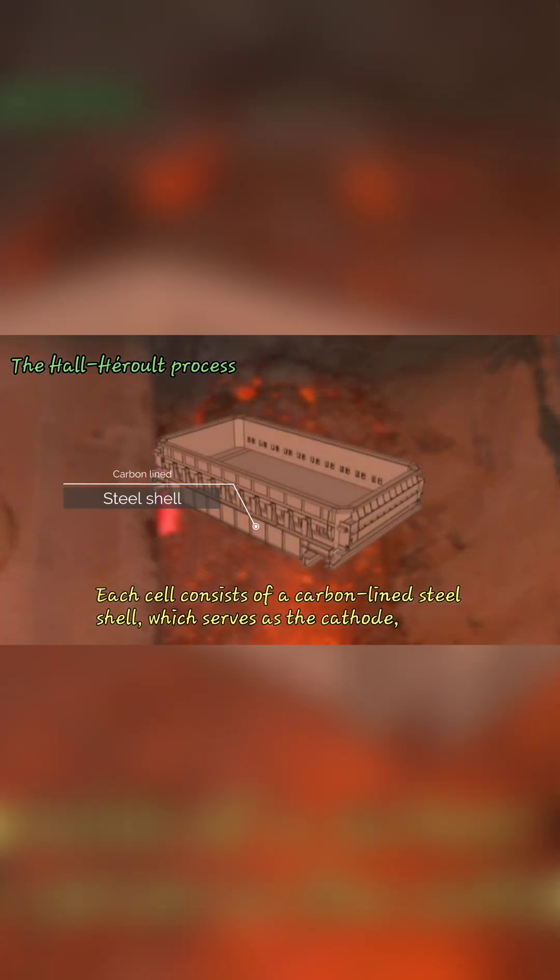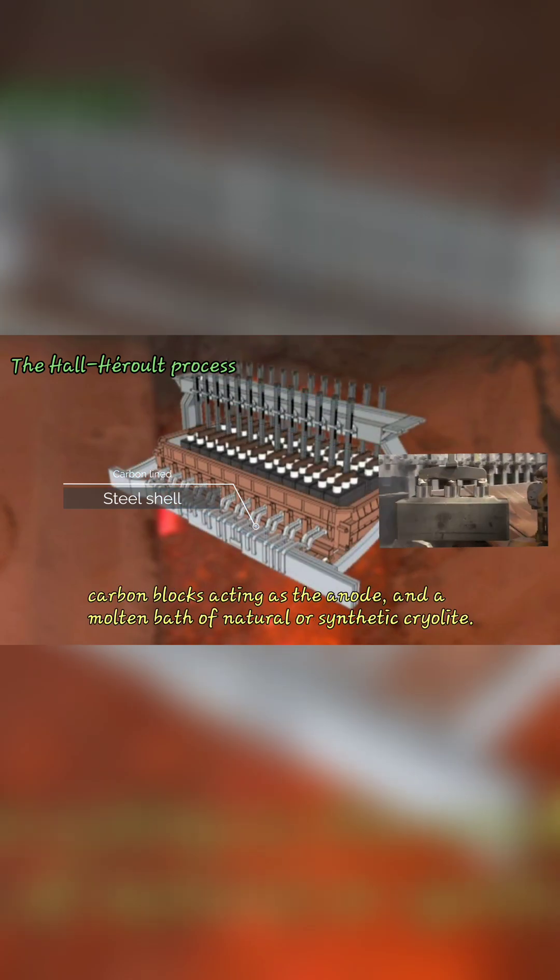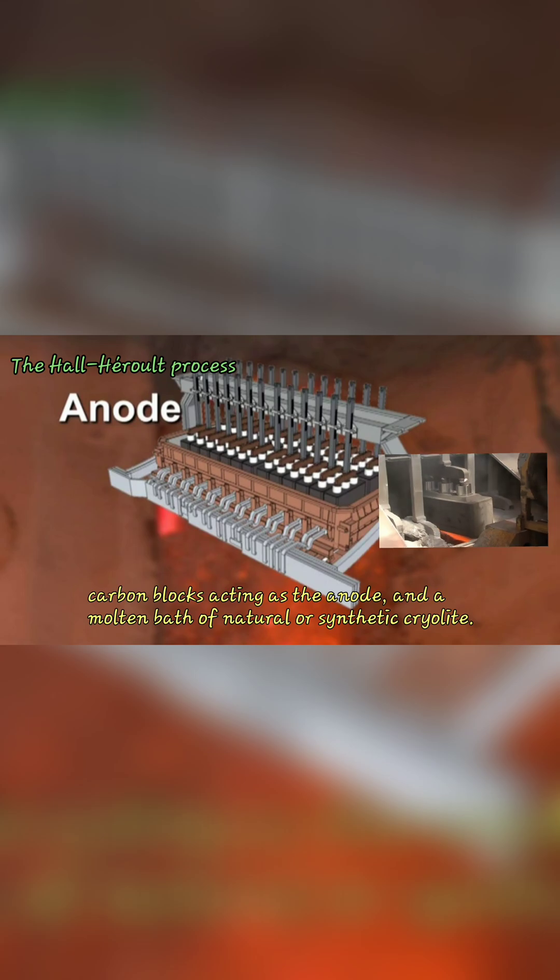Each cell consists of a carbon-lined steel shell, which serves as the cathode, a carbon block acting as the anode, and a molten bath of natural or synthetic cryolite.